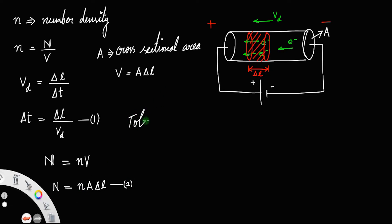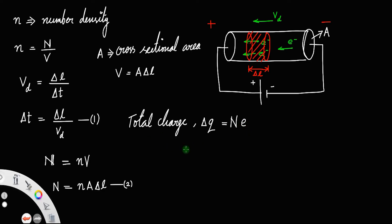We need to find the total charge inside this red cylinder. Total charge delta q equals the total number of electrons into charge of an electron e. We know e is the charge of an electron. Let us call this equation number three.